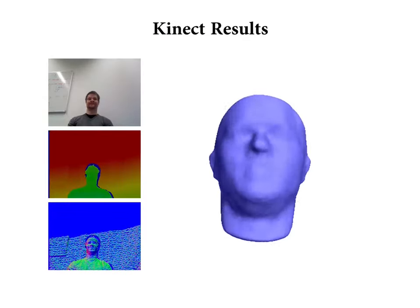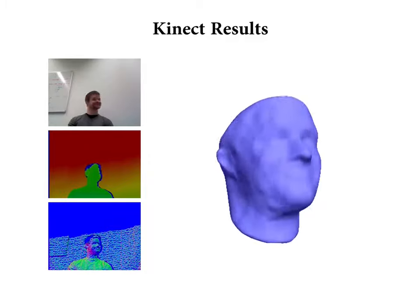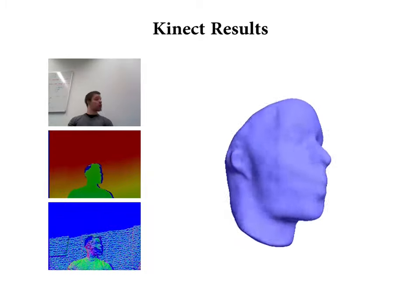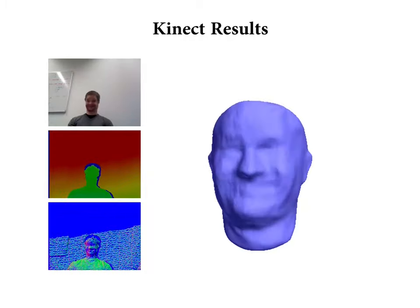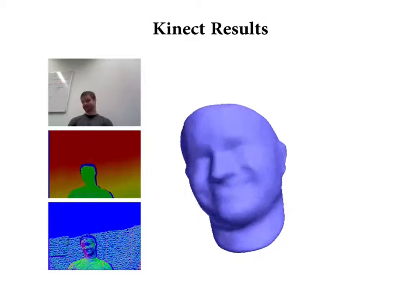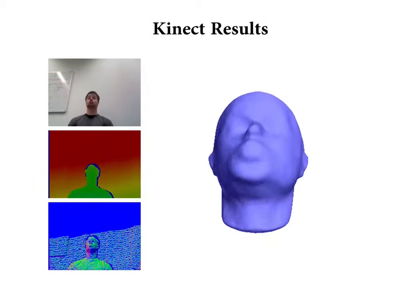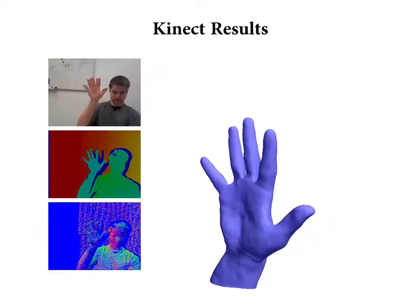We have also tested our method on many different RGBD cameras, such as the Microsoft Kinect. While we are still able to track many of the non-rigid changes, the Kinect's low depth resolution prevents us from capturing local surface detail.